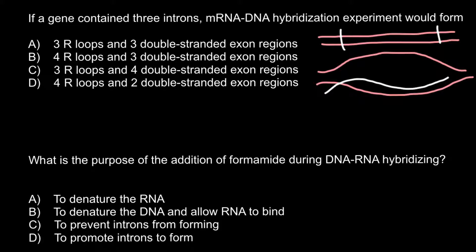In eukaryotes we have some sequences that code for the introns and some sequences that code for the exons. So in the immature message RNA we also have these sequences that later would be spliced off. The actual size of the mature message RNA would be much smaller because it wouldn't have the fragments that code for the introns — only exons remain. If we hybridize this mature message RNA with the corresponding template strand of the DNA, here is what happens.